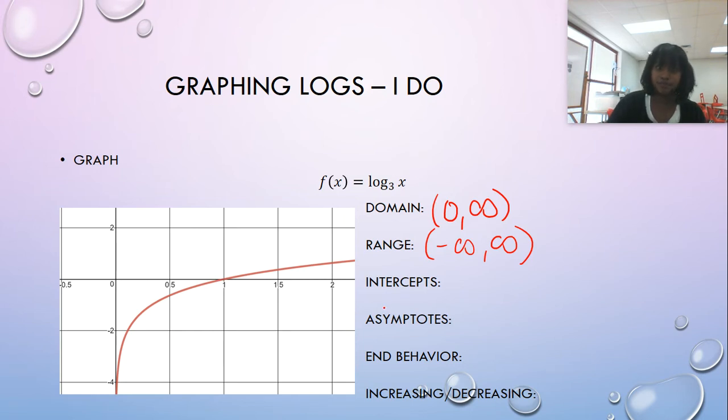The asymptote is occurring at the y-axis this time, so x equals zero. Your intercept is not occurring at zero comma one. It's occurring at one comma zero. Everything's backwards.